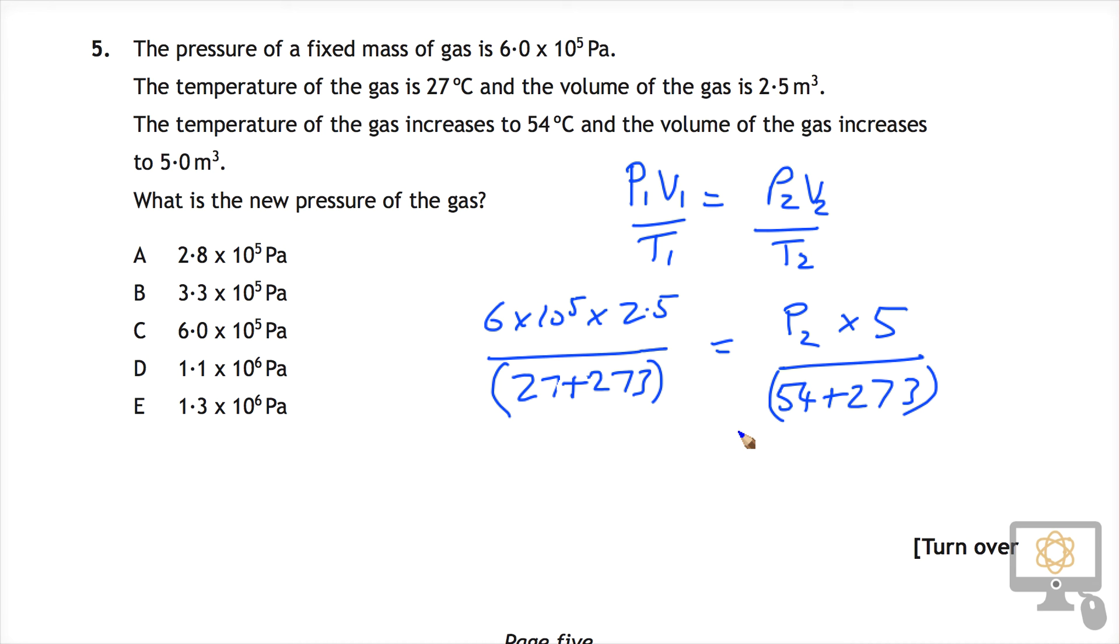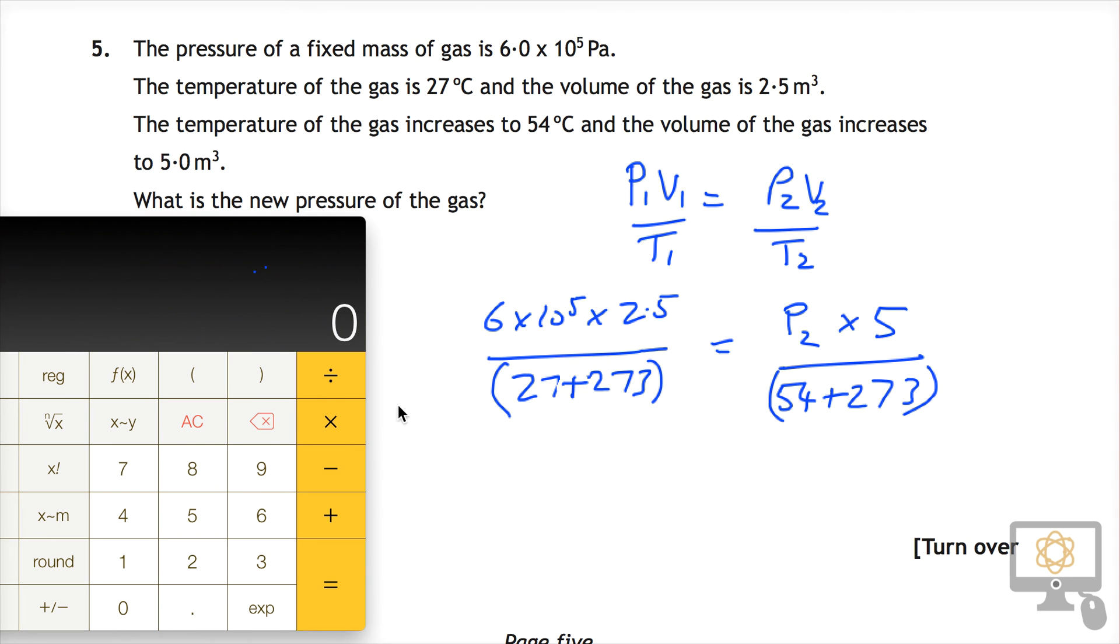It's a matter of now plugging all those numbers into the calculator and seeing how we get on. I've brought up my calculator and I'm going to try and enter these numbers. We've got 6 times 10 to the power of 5, so that's this button EXP 5, multiplied by 2.5.